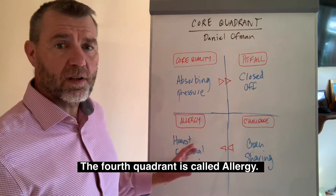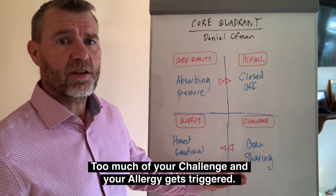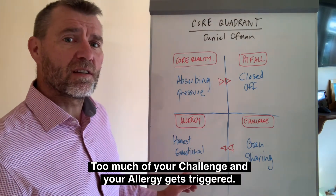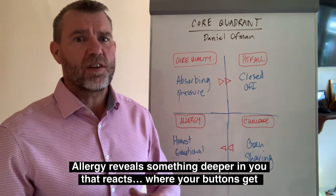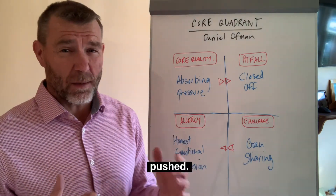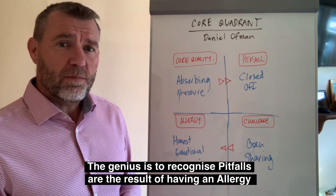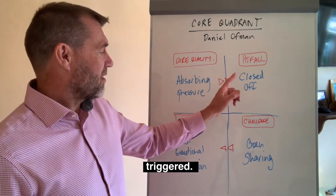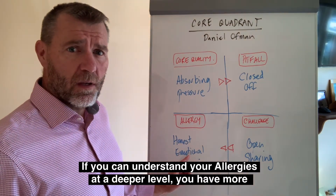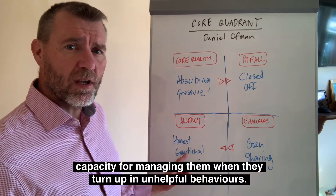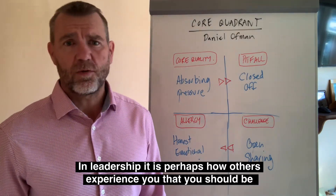But here's the genius. The fourth quadrant is called allergy. Too much of your challenge and your allergy gets triggered. Allergy reveals something deeper in you that reacts — it's kind of like where your buttons get pushed. The genius is to recognize that pitfalls are the result of having allergies triggered. If you can understand your allergies at a deeper level, you have more capacity for managing them when they turn up in unhelpful behaviors.